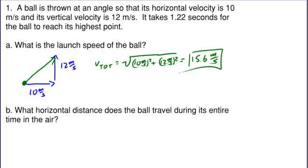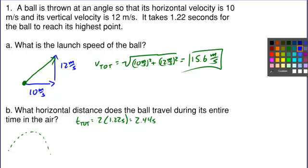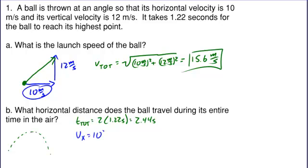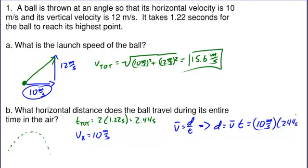Now in part b, it asks: what horizontal distance does the ball travel during its entire time in the air? Let's make a diagram and realize the ball is going to go up and come back down. We know it takes 1.22 seconds to reach its highest point, therefore the total time in the air must be 2 times that, or 2.44 seconds. The velocity in the x direction was 10 meters per second. Since there's no acceleration in the x direction, we use distance equals average velocity times time, or 10 meters per second times 2.44 seconds, giving a displacement of 24.4 meters.